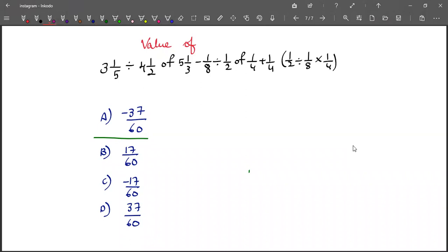First, we need to solve the brackets. In the bracket, we need to solve for division. So when 1 by 2 divided by 1 by 8, we will be getting 4.